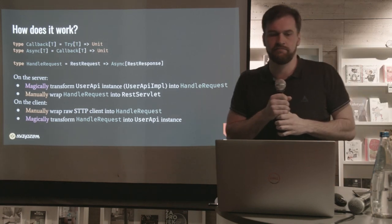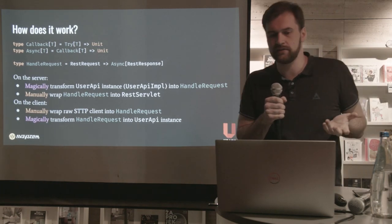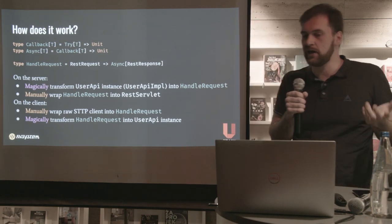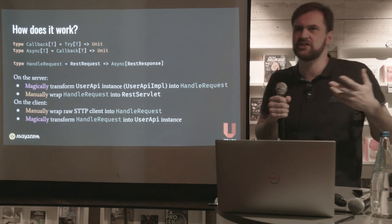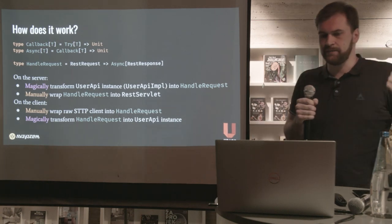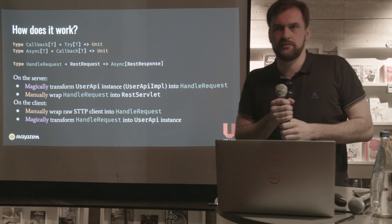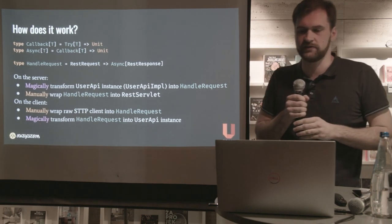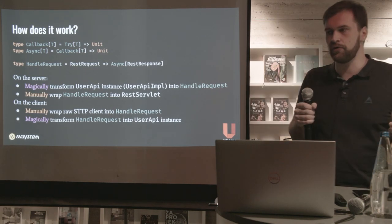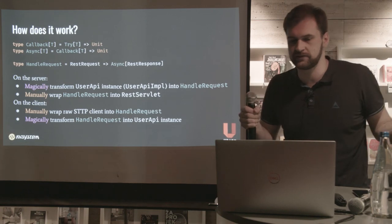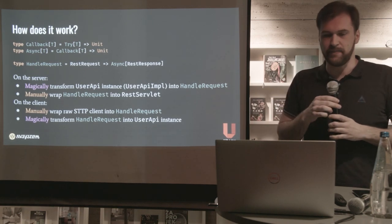On the client side, the process is pretty much the same but with reversed order. You have some native HTTP client library, and then you manually turn that client into a handleRequest function — a similar amount of work as turning handleRequest into a servlet, mostly about transforming request/response representations and handling async calls. Once you have the handleRequest function, with a single line you can magically turn it into a typed UserAPI proxy and call nicely typed methods on the client side.